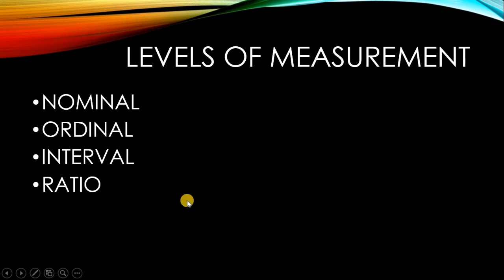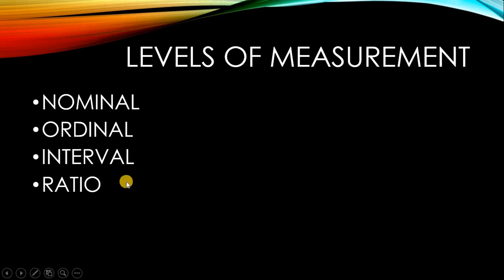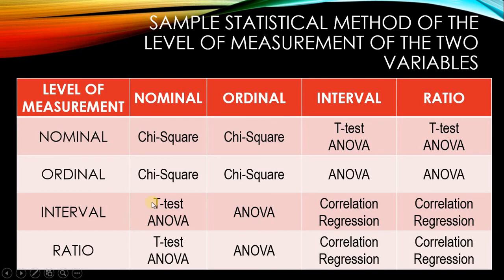There are levels of measurement, and it's very important to determine them. The first level is nominal — normally these are names. Ordinal — these are orders. Interval — these are scale. And ratio — this is the same as interval but includes absolute zero. It's very important to determine the level of measurement so you can determine what kind of statistical method is applicable for the type of variables you have gathered.